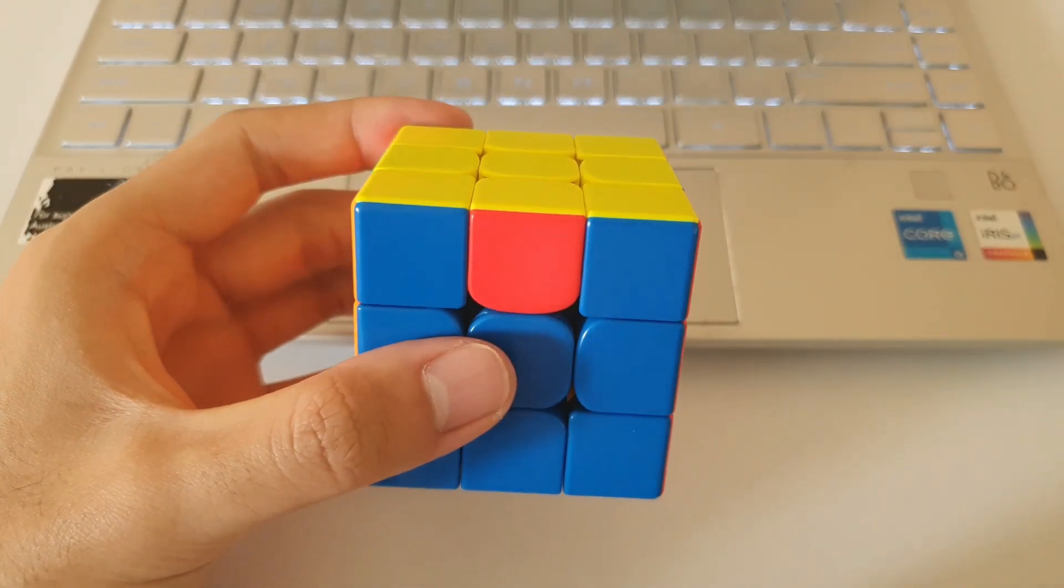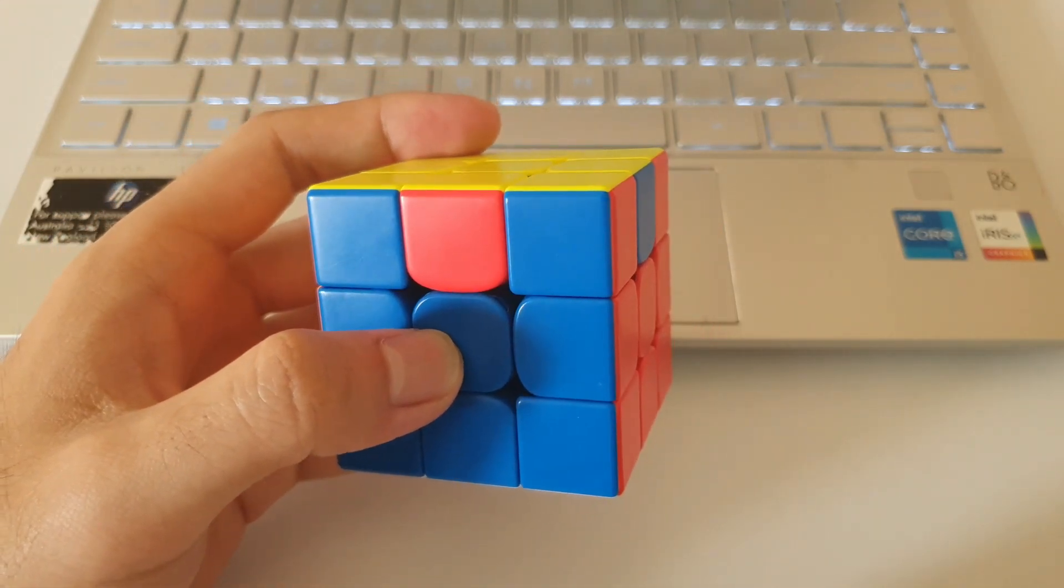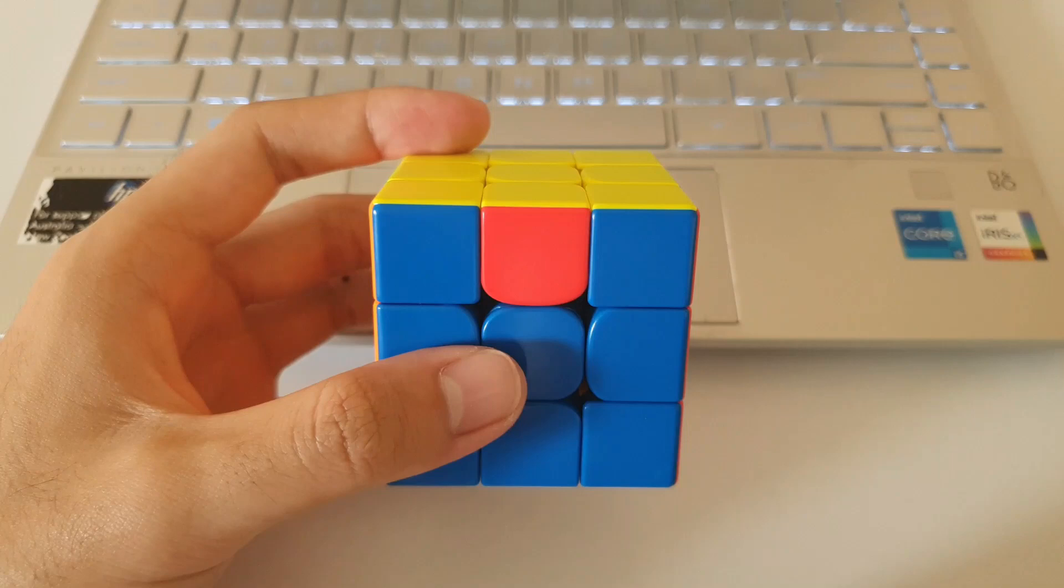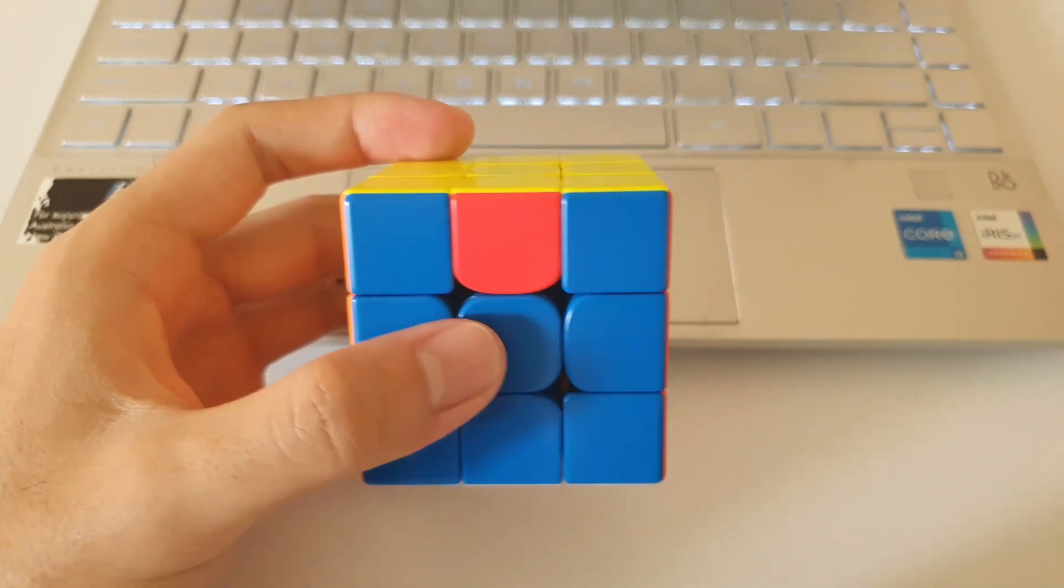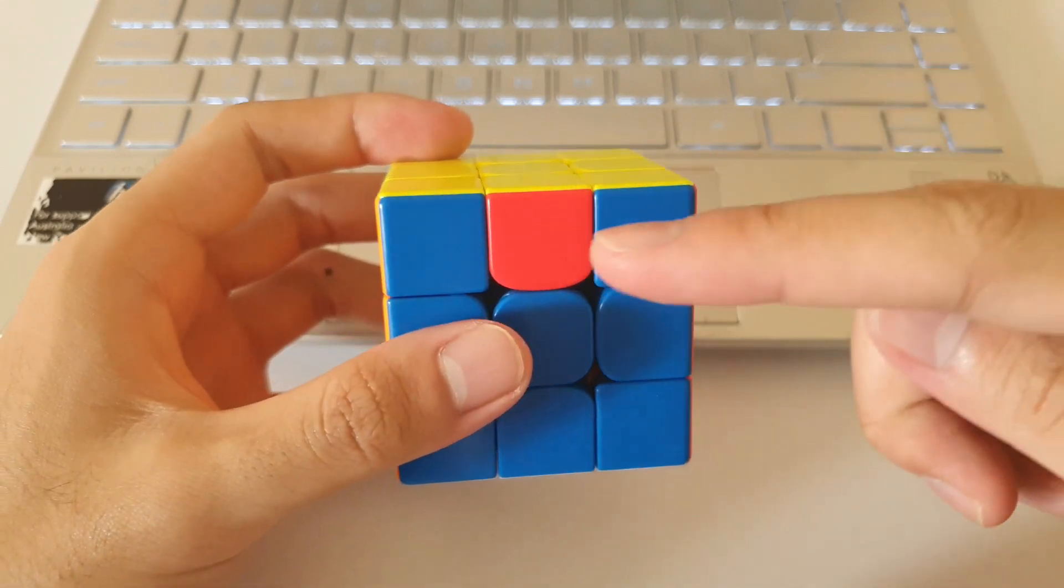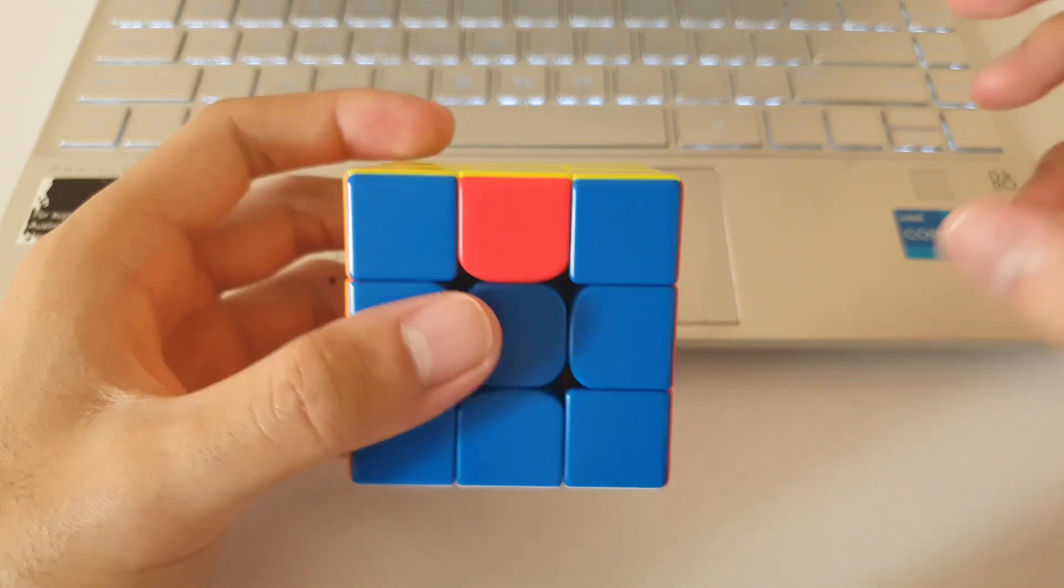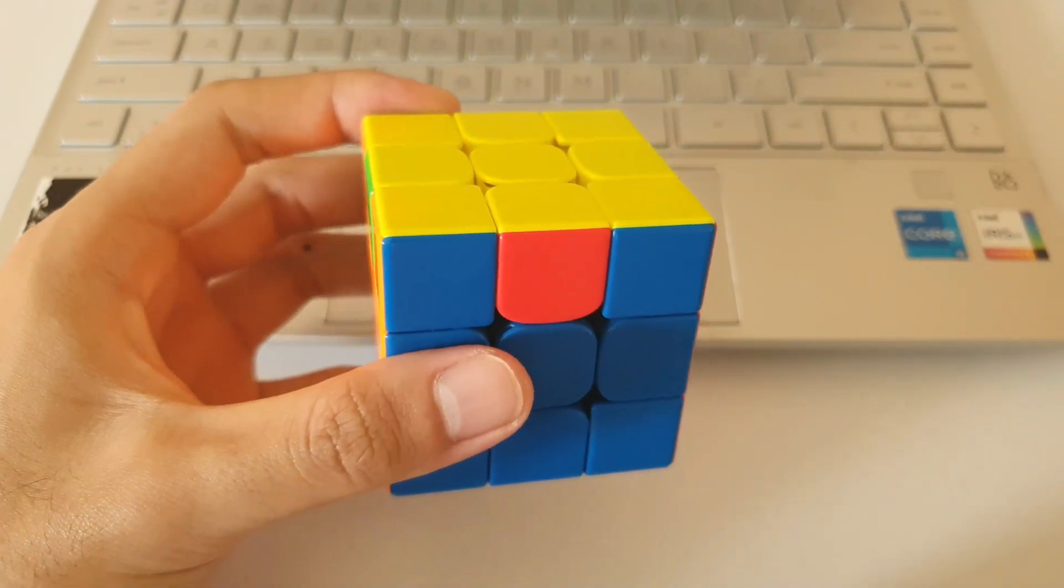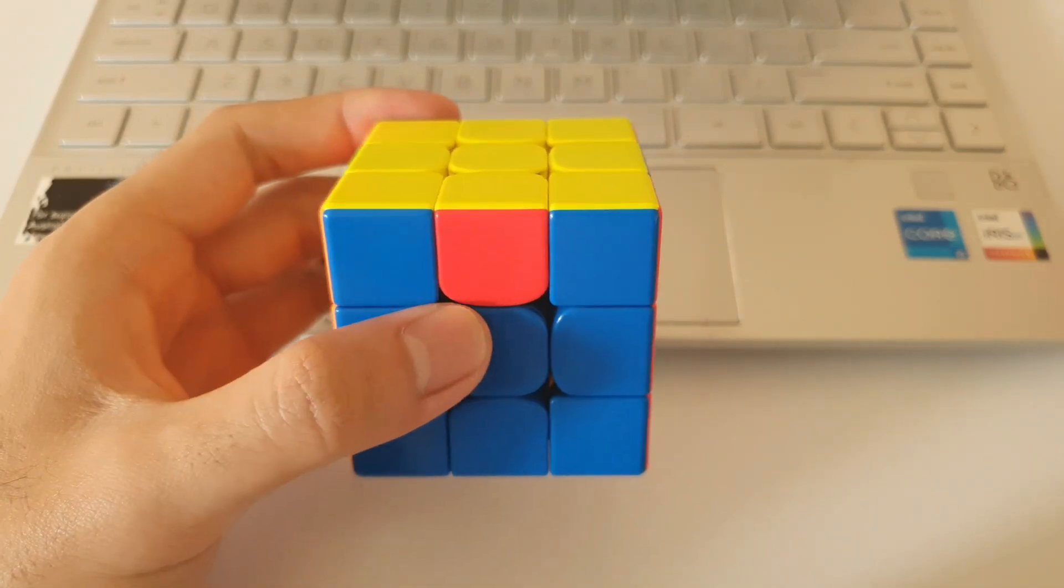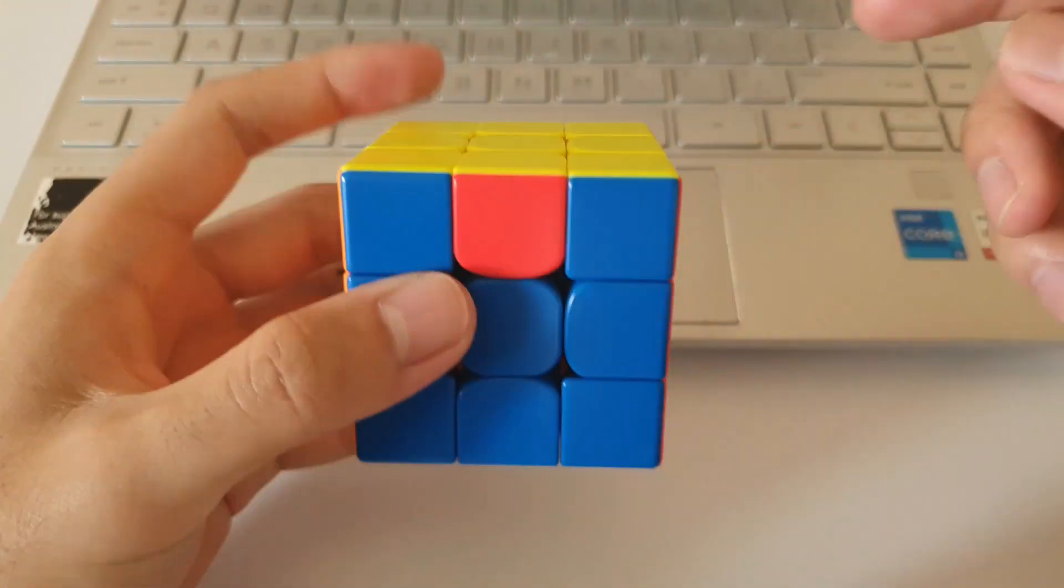As seen, the Z-perm AUFs are quite a bit more difficult to recognize compared to other PLLs. Honestly, I had a lot of trouble with AUF recognition for Z-perms when I first started as well. Just thinking about opposite colors just took up a lot of time. And oftentimes, by the time I've done the algorithm, I still have to recognize AUF again.